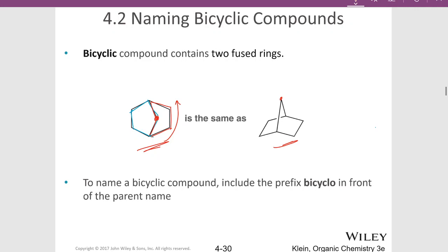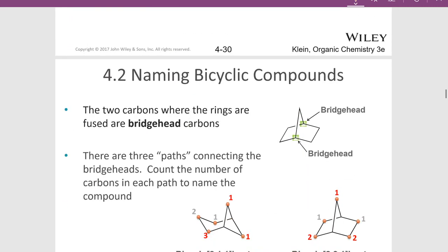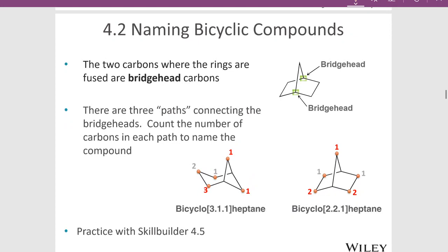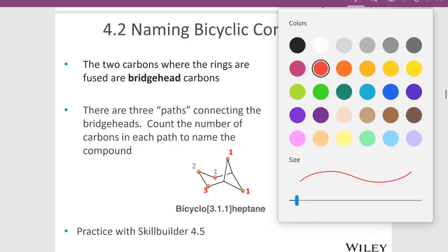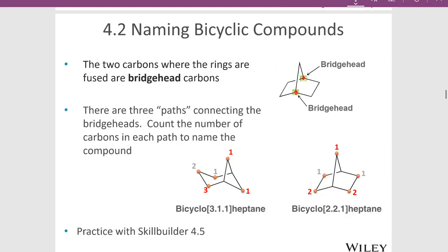To name a bicyclic compound, we have to include the prefix 'bicyclo' in front of the parent name. This is a fairly complicated process, and I'm not going to go into too much depth — I don't expect my students to do this on a test, but you may see it in WileyPlus. The two carbons where the rings are fused are called bridge head carbons. There are three paths in this molecule that go away from the bridge heads — a one-carbon path and two two-carbon paths.